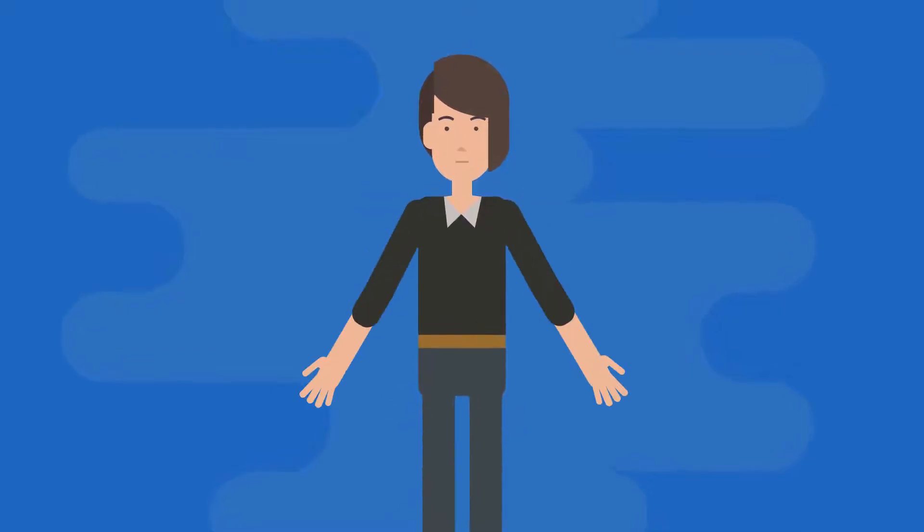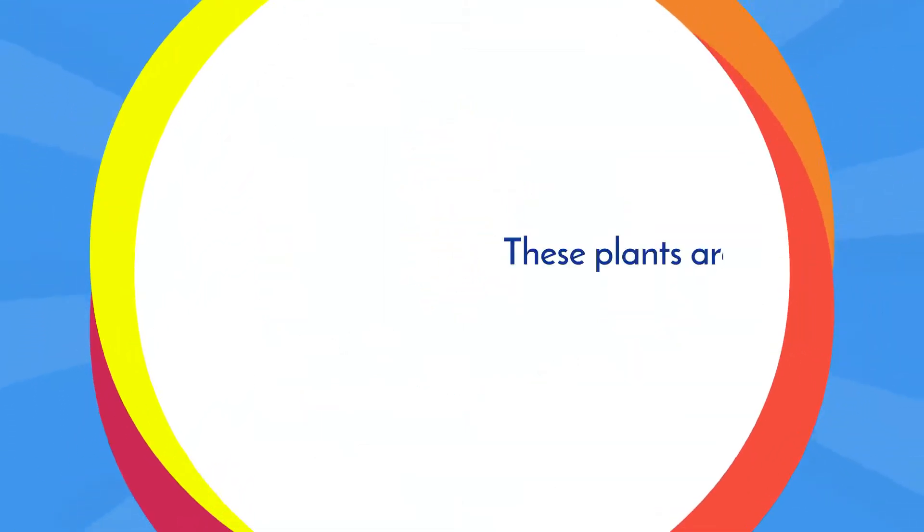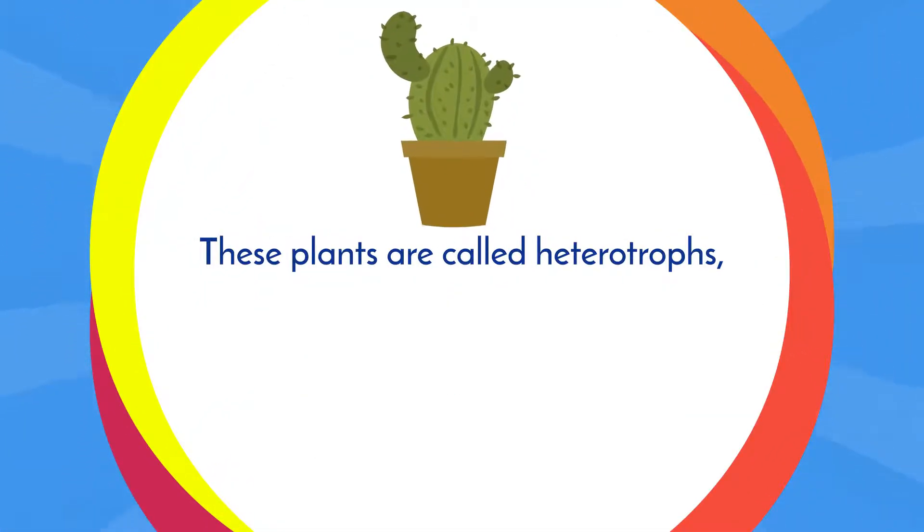But there are a few exceptions to this. A few plants survive by feeding off of other organisms. These plants are called heterotrophs.